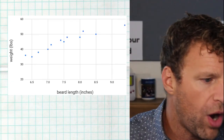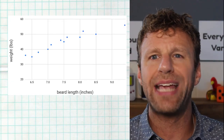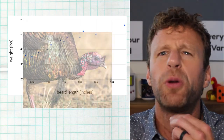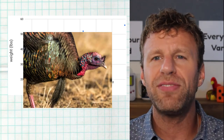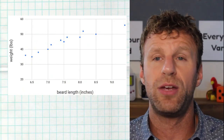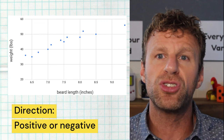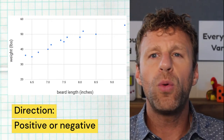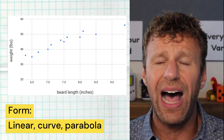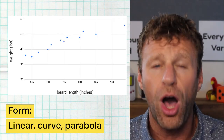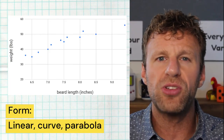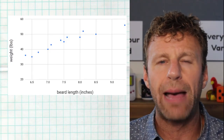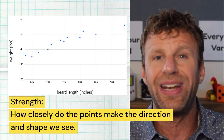Here's an example looking at a sample of 12 male turkeys. We looked at the length of their beard and their weight, and we clearly see a relationship. We see a positive direction — as beard length goes up, so does weight. We could also have a negative relationship where as X goes up, Y goes down, but that's not what we're seeing here. We also look at the form — it's creating a line, so it's linear. A linear form means there is a constant rate of change: as one variable goes up, the other goes up at a constant rate.